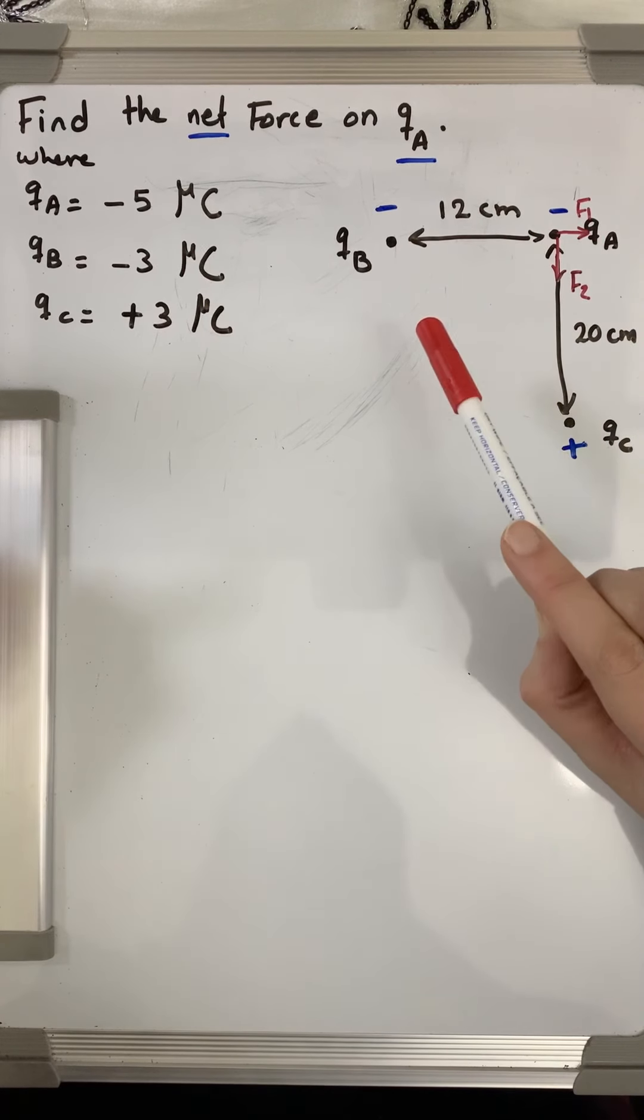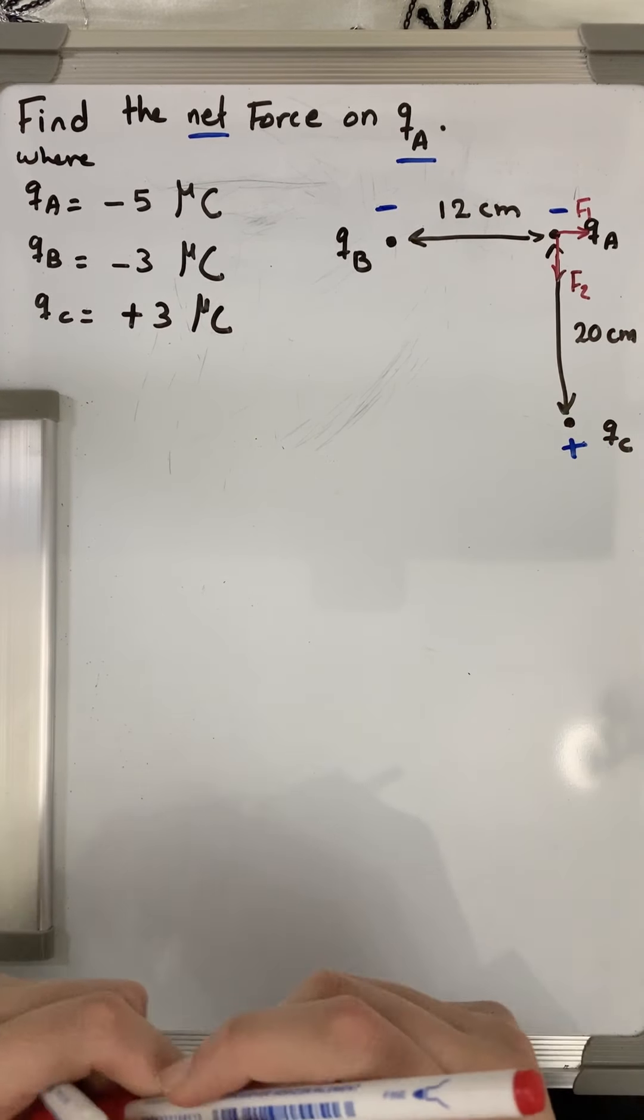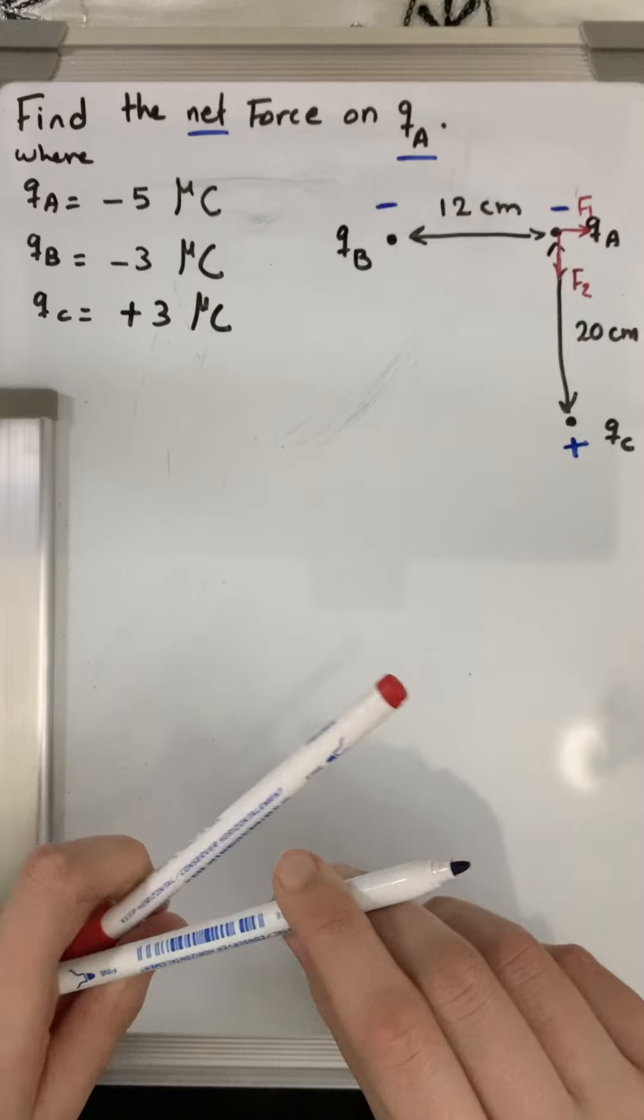it's a repulsive force acting to the right, and F2 which is an attractive force because qa and qc will be attracting each other and it is directed downward. If we want to calculate the net force, we need to calculate first each one separately.